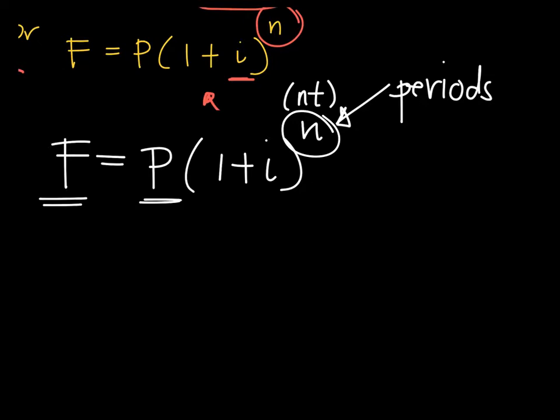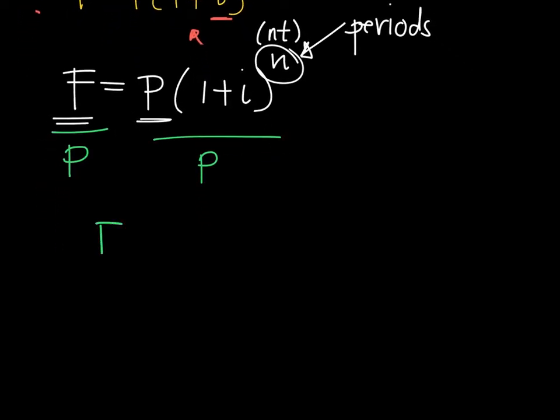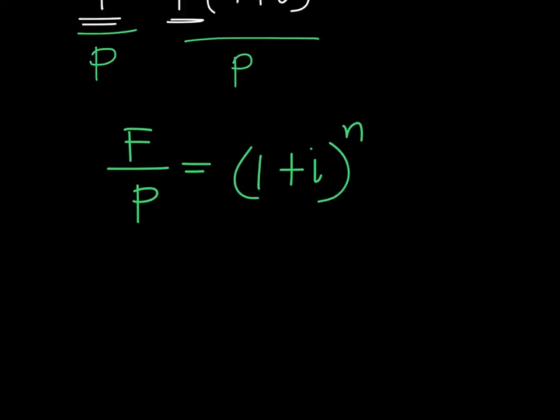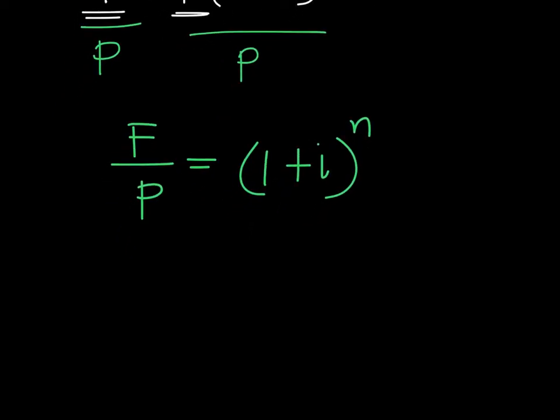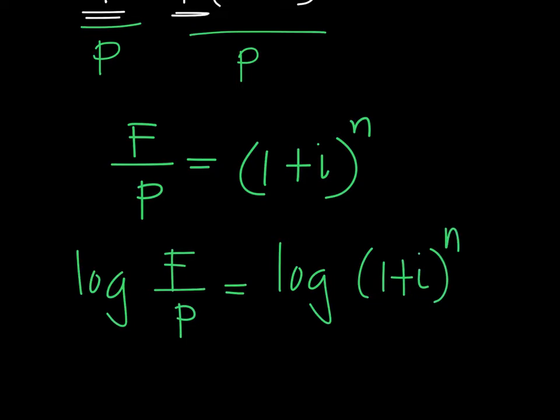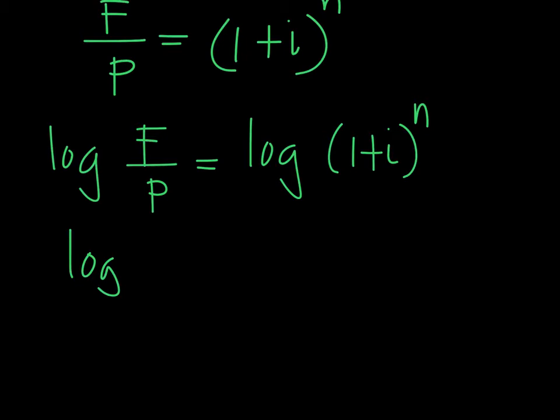So, what we can do first, since we want to isolate the N, we can divide both sides. Dividing both sides by P will make it F over P is equal to 1 plus I raised to N. Now, again, this is a case in which we want to find the exponent. Every time that happens, the approach that you can use is the use of log or LN. Let's try log this time. So, log F over P must be equal to the log of 1 plus I raised to N. And this will give you log F over P is equal to N times log of 1 plus I using the power rule.